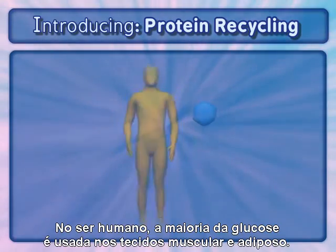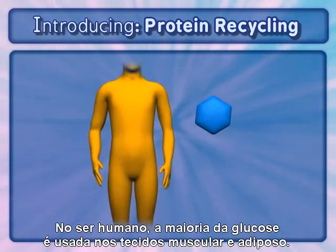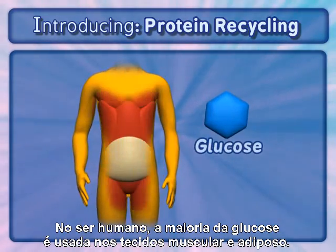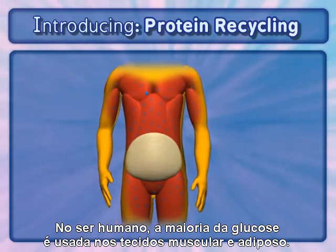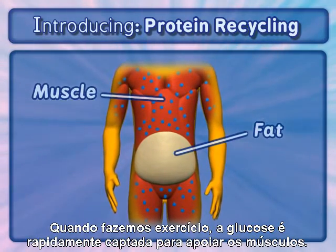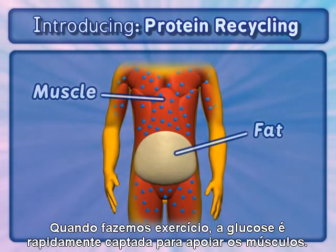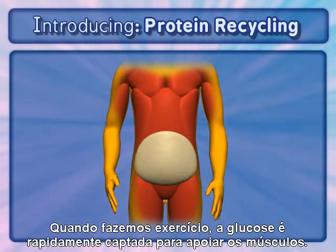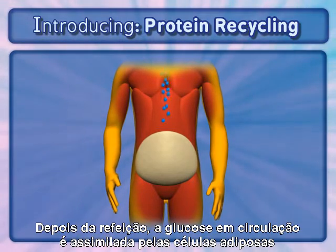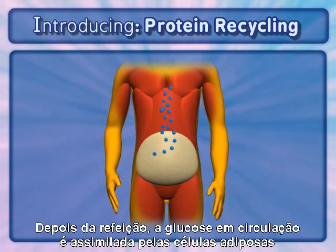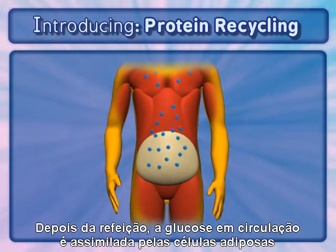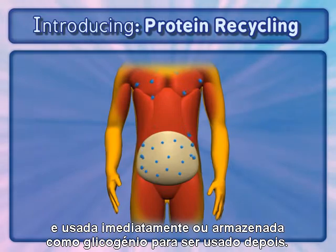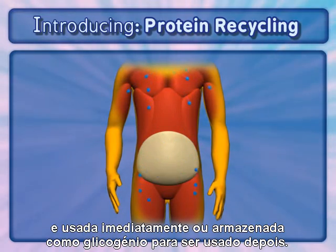In humans, most of the glucose is utilized in muscle and fat tissues. When we exercise, glucose is rapidly taken up to support our muscles. After eating, the circulated glucose is taken up by fat cells and used immediately, or stored as glycogen for later use.